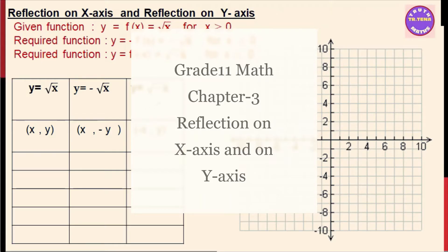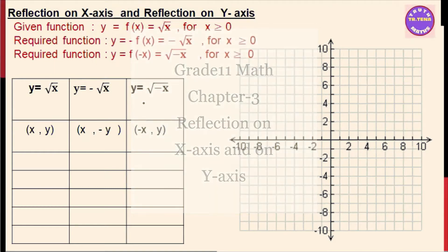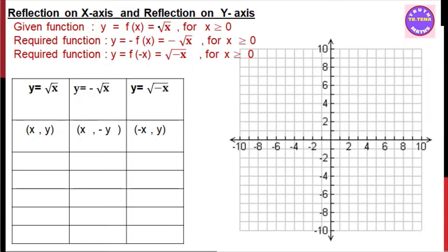Translation is about the translation — the example of our function. We can learn the reflection. Reflection is about the elementary function. The square root function is about the example. Reflection is about the x-axis and the y-axis, and zero reflections.